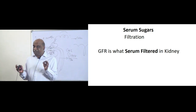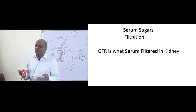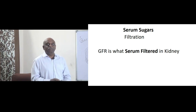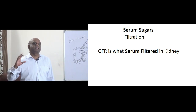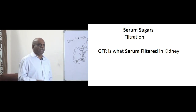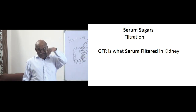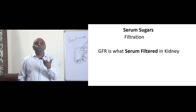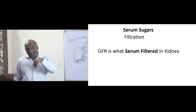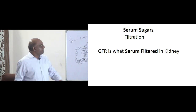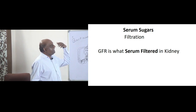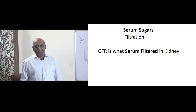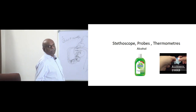Now, serum and sugars — how will you remember that filtration is the method of sterilization? Very simple: glomerular filtration. You know the word — glomerular filtration is filtering plasma. Plasma means serum. So, serum, sugars — filtration is the method of sterilization.